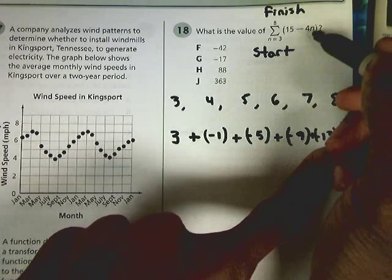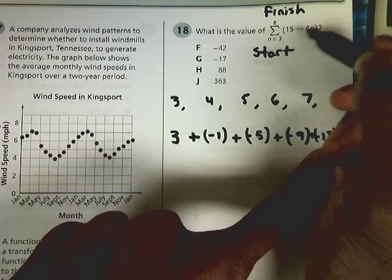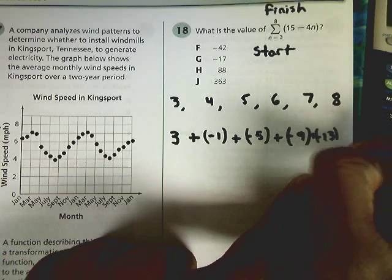And then the last number, number 8, 8 times 4 is 32. And then 15 minus 32 is just going to be negative 17.